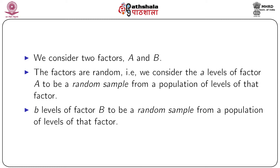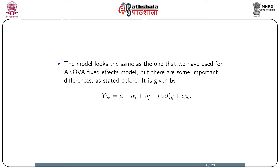In a two-way analysis of variance random effects model, we consider two factors, A and B, and we consider the factors to be random. By random we mean that the different levels of A and B are randomly selected from a pool of different levels. The a levels of factor A are a random sample from a population of levels of that factor, and the b levels of factor B are a random sample from a population of levels of that factor.